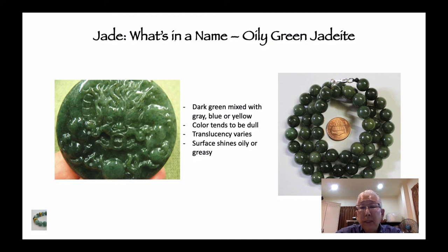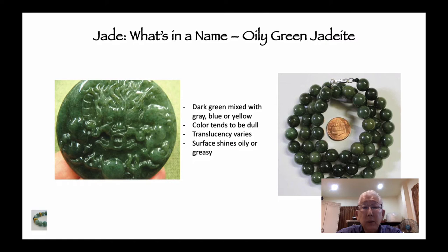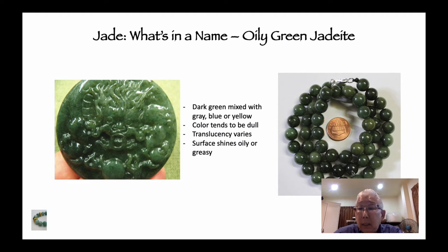Then we have oily green jadeite — dark green mixed with some gray, blue, and yellow. Colors tend to be dull, so the tone is not terribly intense. Translucency varies; some pieces are more opaque, others slightly more translucent. They may also have a shiny surface.